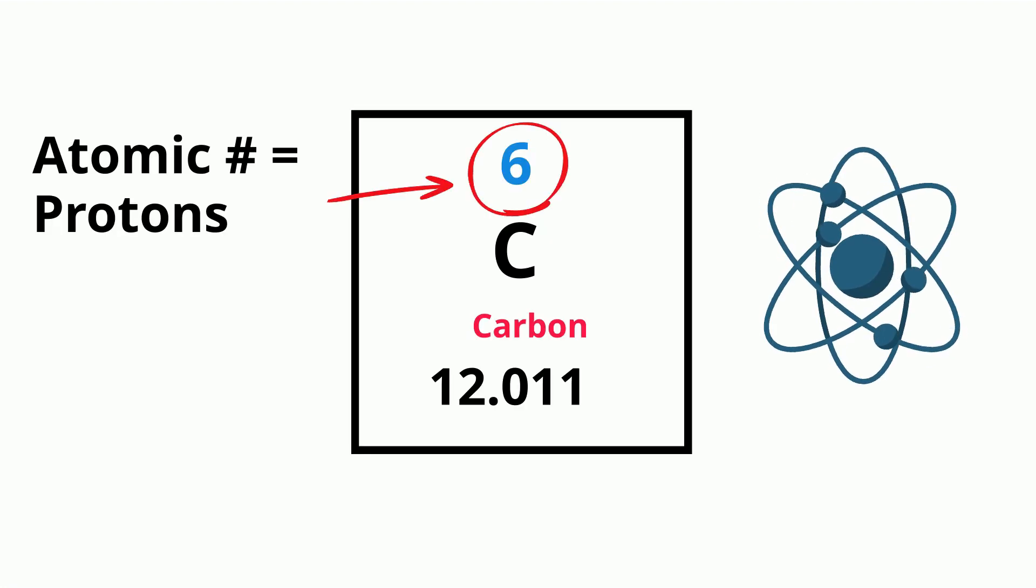The number of protons in a nucleus is called the atomic number. The sum of the number of neutrons and the number of protons in a nucleus is called the atom's mass number.